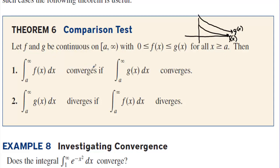If f(x) converges, g(x) converges. If g(x) diverges, f(x) diverges. So if f(x) does not converge and g(x) is above it — an even greater value — then g(x) will not converge either; it will diverge.